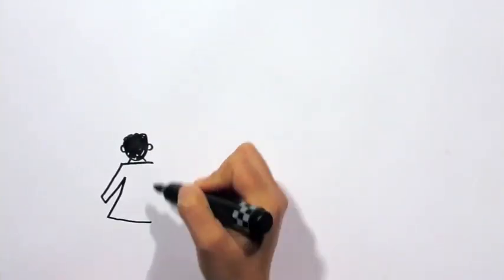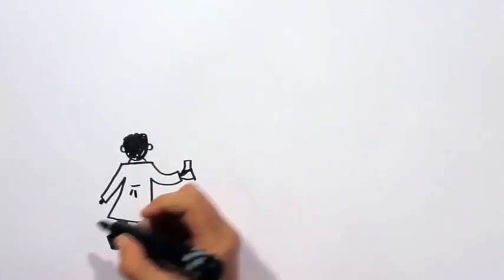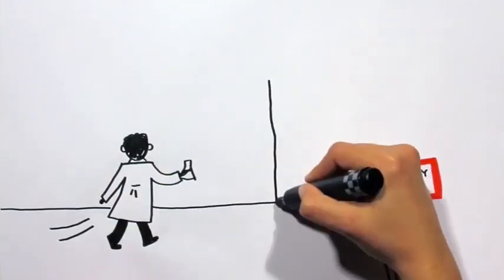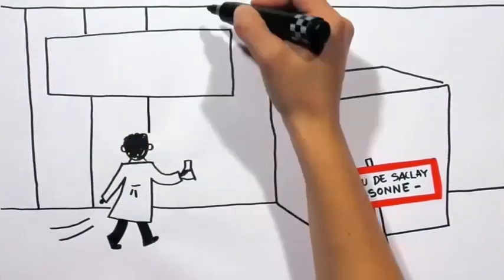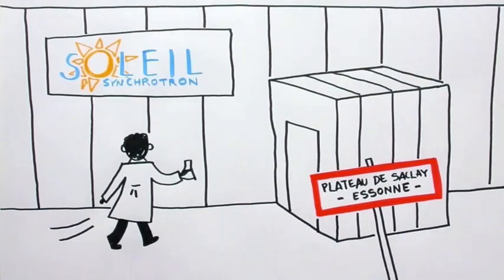To face all these challenges, researchers need to use a very intense source of light in their experiments. The light they are looking for can be found in a synchrotron radiation facility such as Soleil.